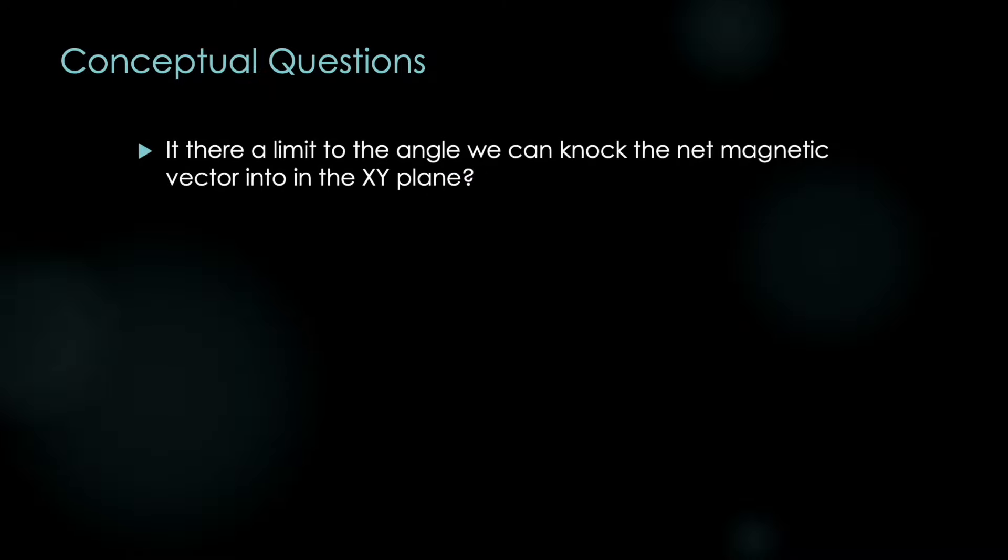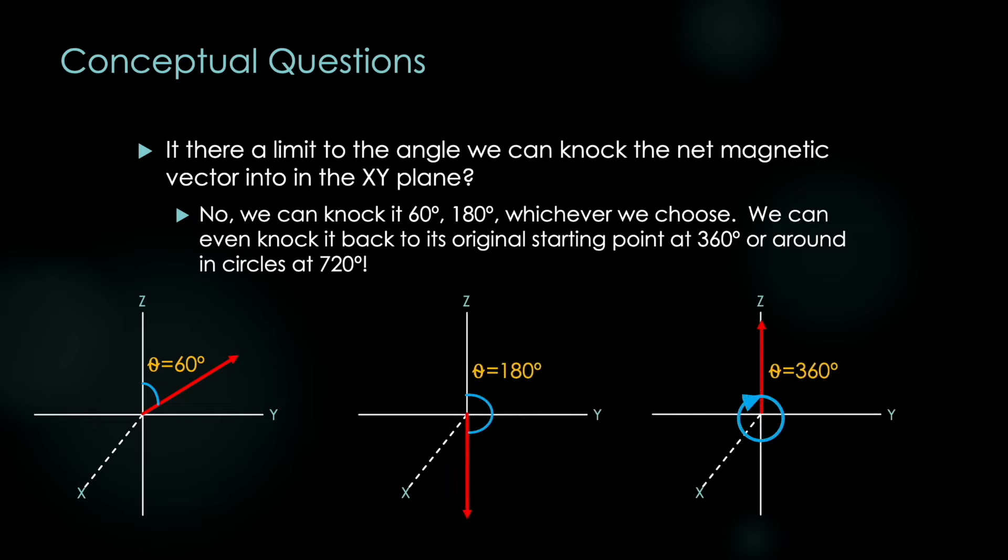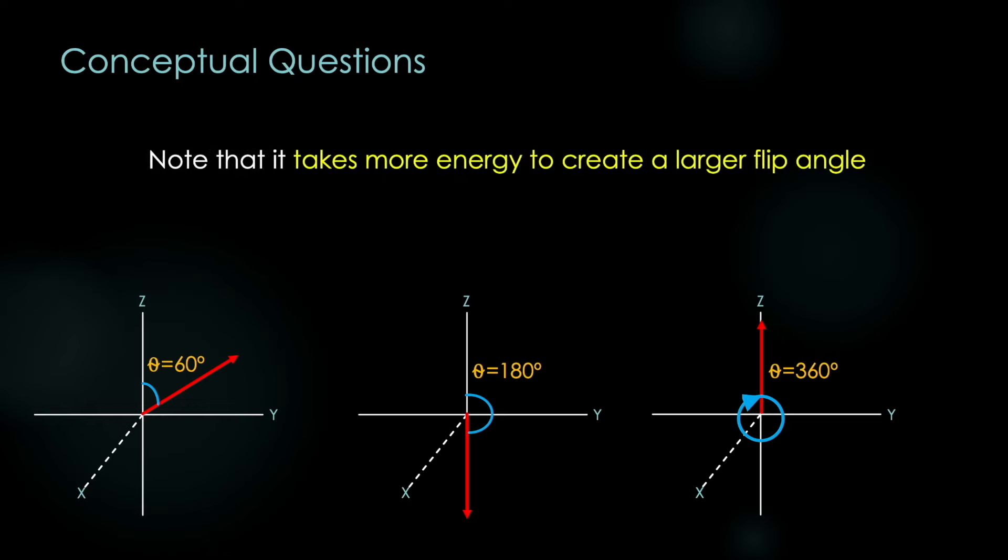And then finally, is there a limit to the angle we can knock the net magnetic vector into in the XY plane? And the answer is no. We can knock at 60 degrees, 180 degrees, whichever we choose. We can even knock it back to its original starting point at 360 degrees, or even in circles at 720 degrees. But note that it takes more energy to create a larger flip angle, and that will be important when talking about the heating inside the body that this can generate.